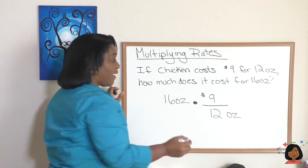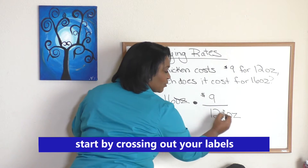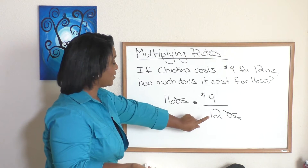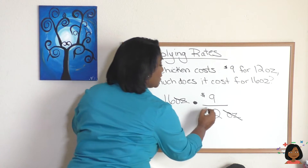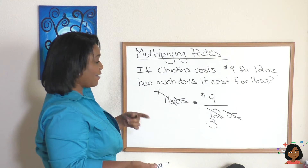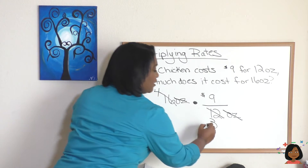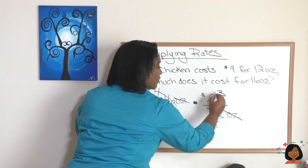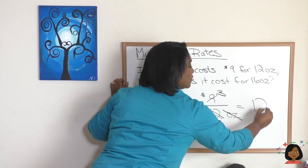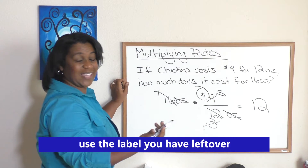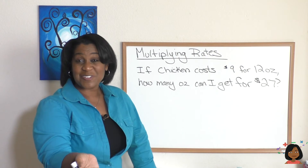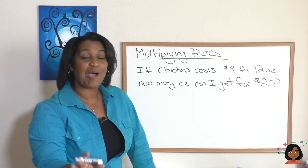Now let's simplify. First, we cross out the ounces label. Can we simplify anything else? Yes — 4 goes into both 12 and 16, giving us 3 and 4. Then we can simplify again: 3 goes into both 3 and 9, leaving us with 4 times 3. The only label left is dollars, so the answer is 12 dollars.